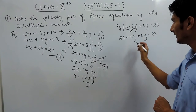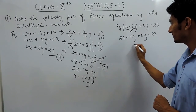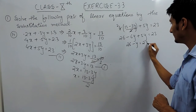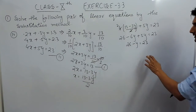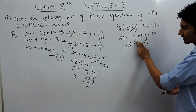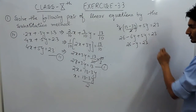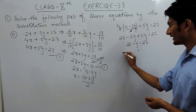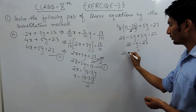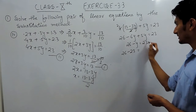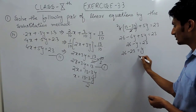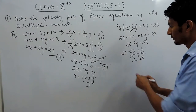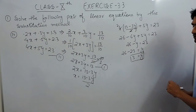Now solving this equation: combining the y terms gives minus y, and the constants are 26 and 23. Shifting the variable to one side and the constant to the other — this positive becomes negative and this negative becomes positive — so the value of y equals 3, because 26 minus 23 is 3.